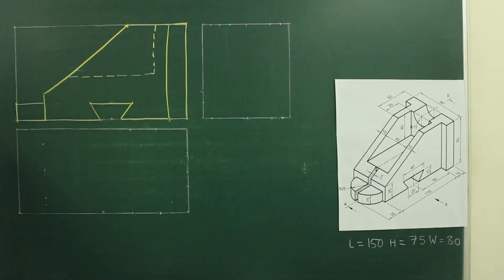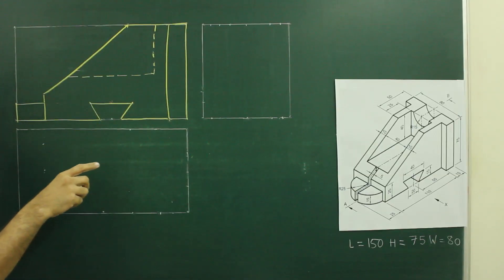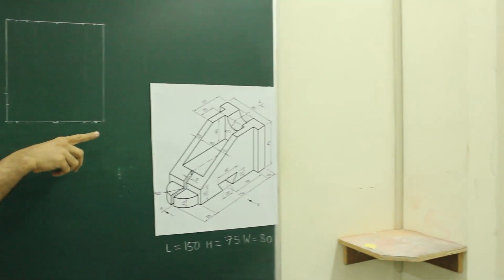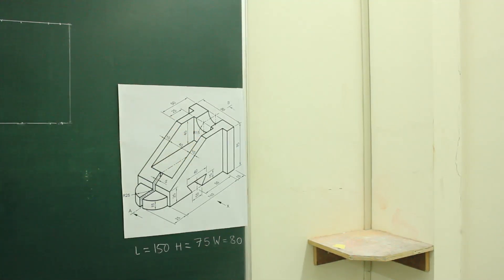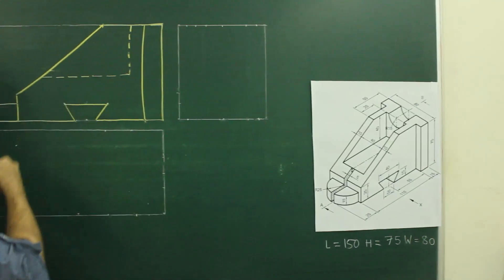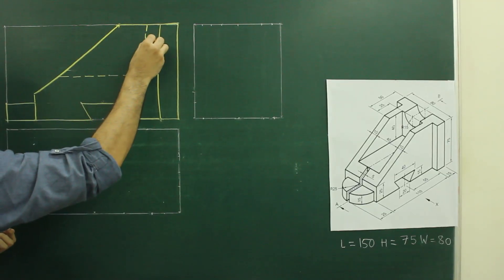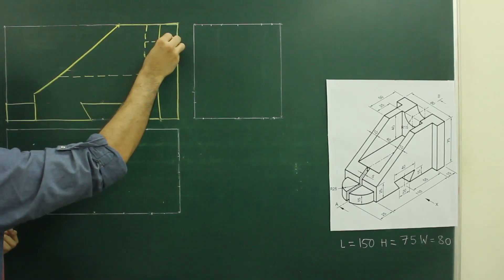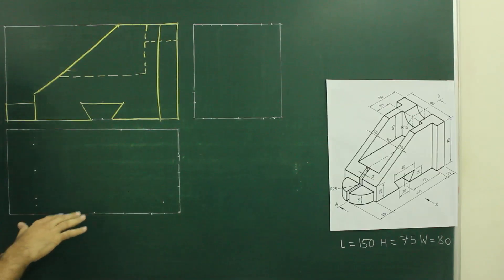We need to draw radius 15 as a dotted line. Also, if you see the main diagram, from the top we need to go down by 15 and we need to draw a dotted line. So we are done with the front view. Now we will draw the top view.